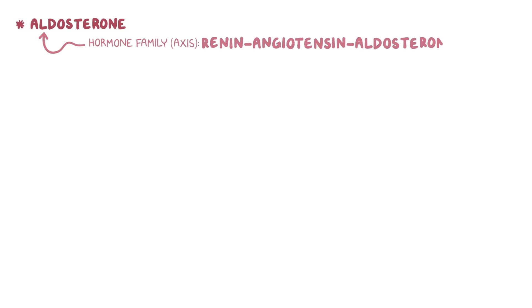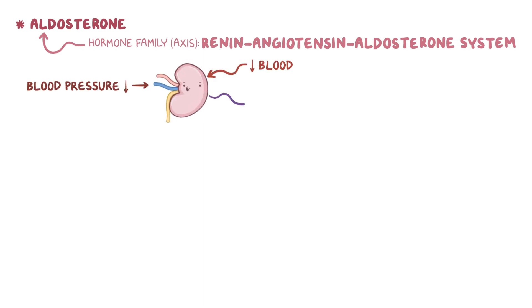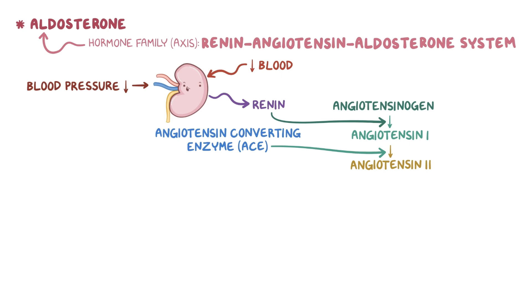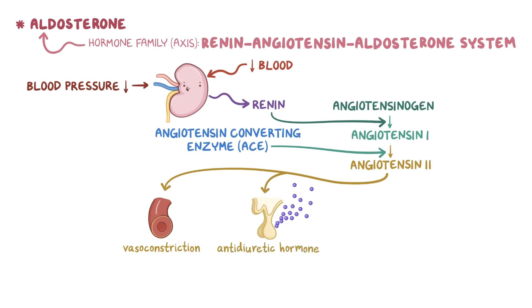Aldosterone is part of a hormone family, or axis, called the renin-angiotensin-aldosterone system. Normally, when blood pressure is low, the kidney gets less blood, which causes it to release renin into the blood. Renin converts a pro-hormone called angiotensinogen into angiotensin 1, and another enzyme called angiotensin-converting enzyme, or ACE, converts angiotensin 1 into angiotensin 2. Angiotensin 2 has many effects, like causing vasoconstriction and stimulating the release of antidiuretic hormone from the pituitary glands.